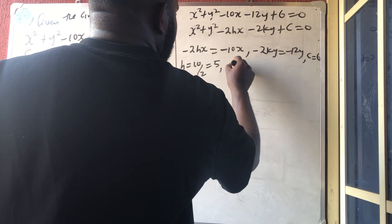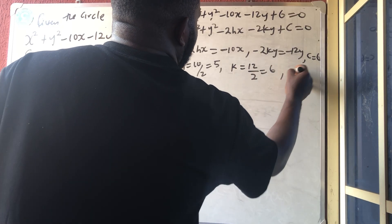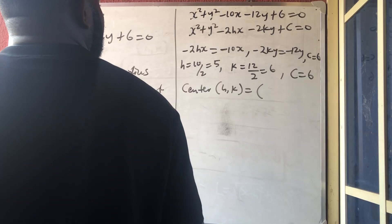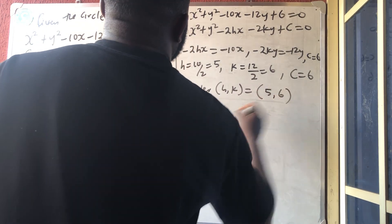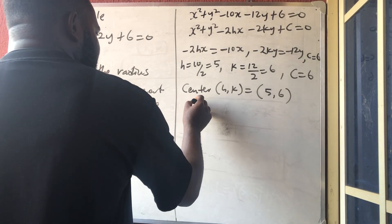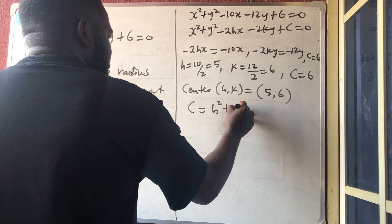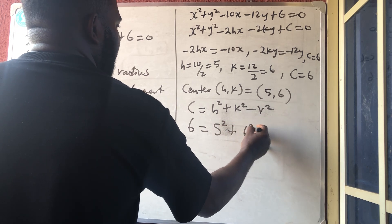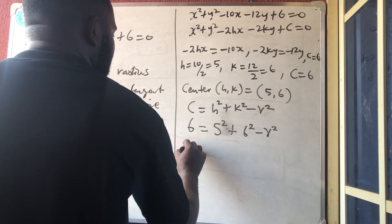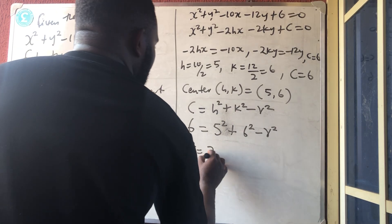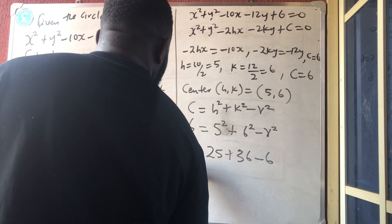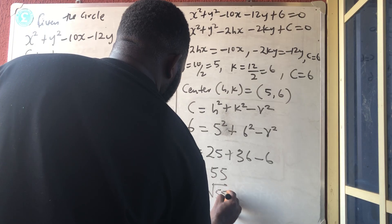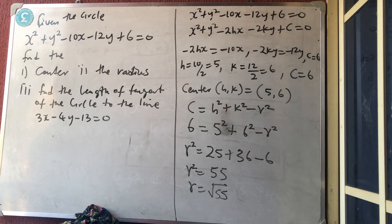So the center h comma k is 5 comma 6. For the radius, using c equals h squared plus k squared minus r squared: 6 equals 25 plus 36 minus r squared, so r squared equals 55 and the radius is the square root of 55.